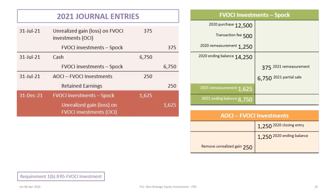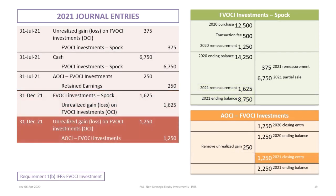At December 31st, we have the intervening year end where we adjust the value of the remaining shares to fair value. We debit FVOCI investments Spock for $1,625 and credit unrealized gain or loss on FVOCI investments for $1,625 — that's 2,500 shares times $0.65 difference. Then, as we did at the end of 2020, we need to close the balance in the unrealized gain or loss on FVOCI investments account to AOCI.